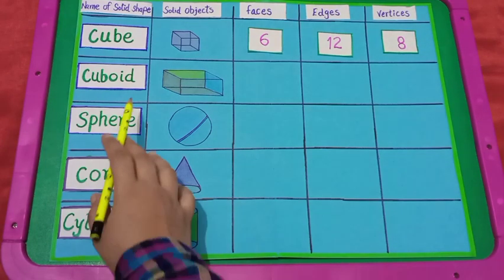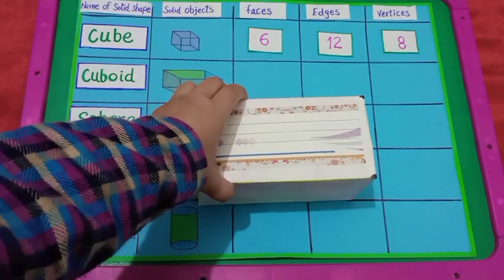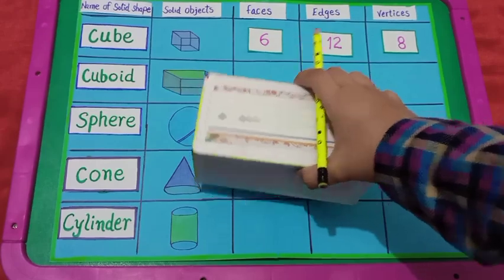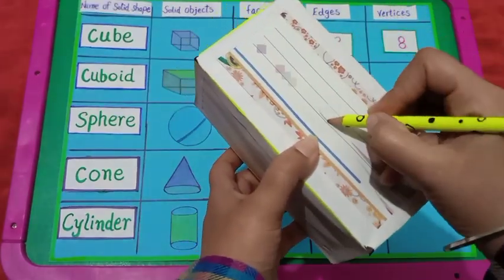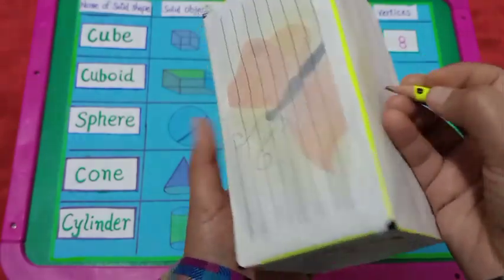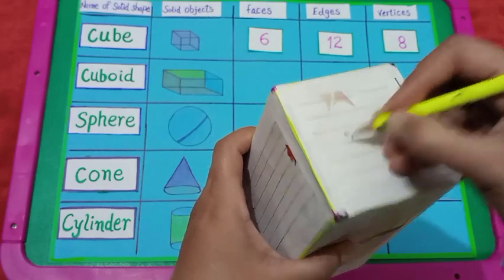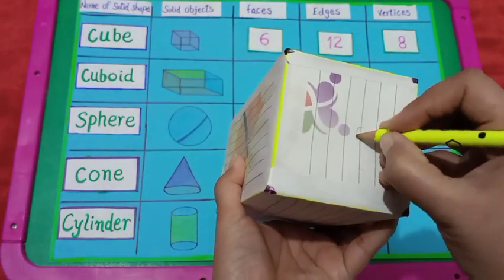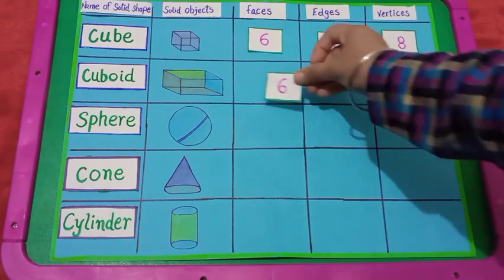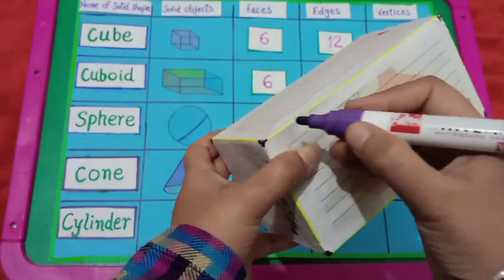Next shape is cuboid. Dear students, this shape is like a cuboid. Let's count its faces: 1, 2, 3, 4, 5, 6. So, dear students, a cuboid has 6 faces.